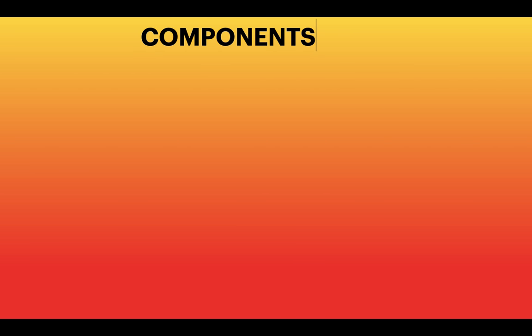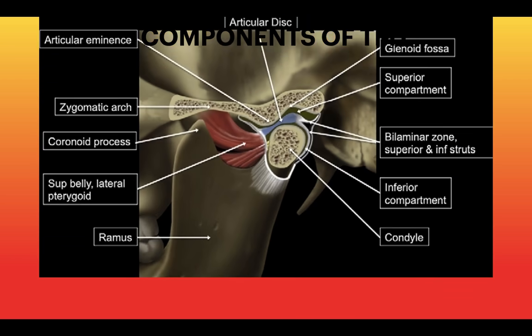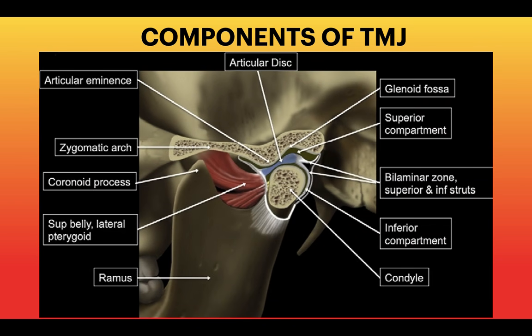What are the components of TMJ? The components include the mandibular condyle, the articulating surface of the temporal bone, the capsule, the articular disc, the ligaments, and the muscular components.